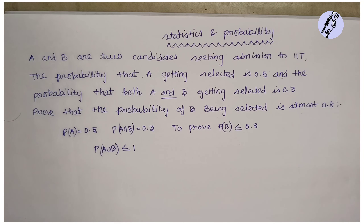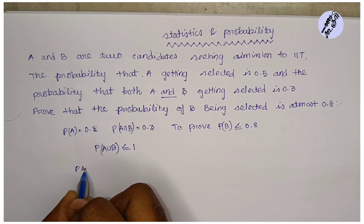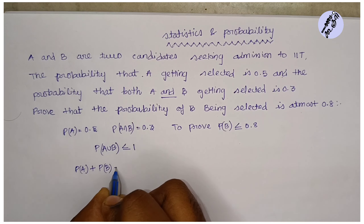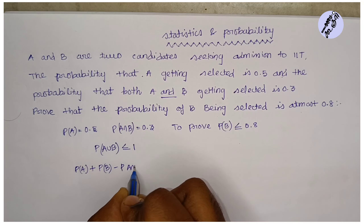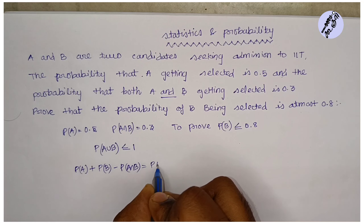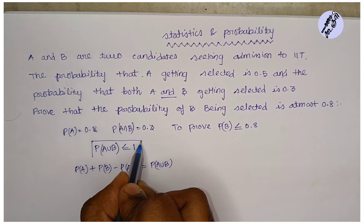So, probability of A union B is less than or equal to 1. Using the addition formula: P(A∪B) = P(A) + P(B) - P(A∩B).